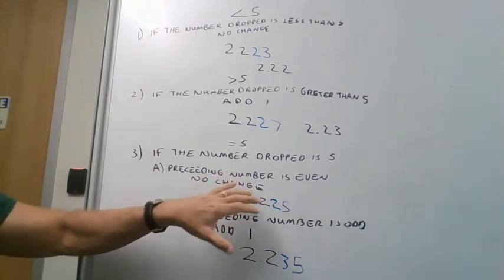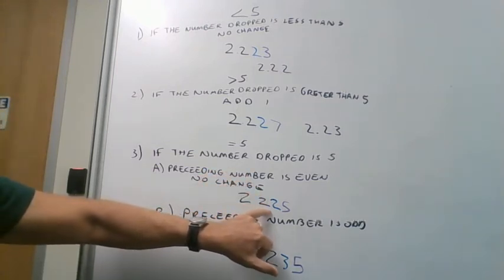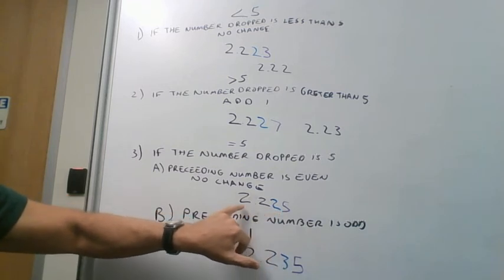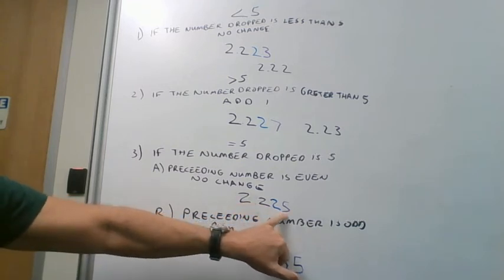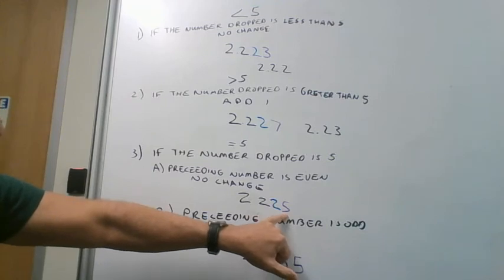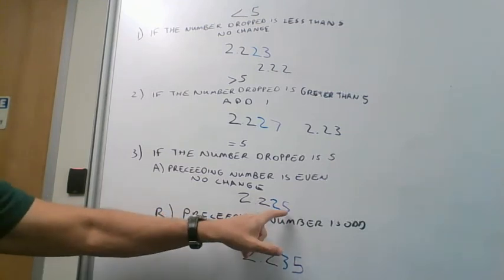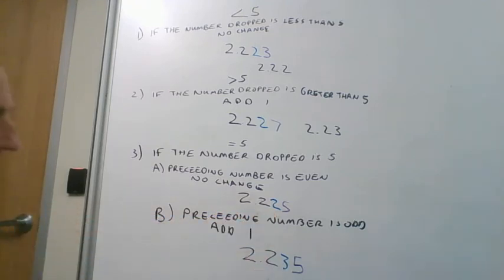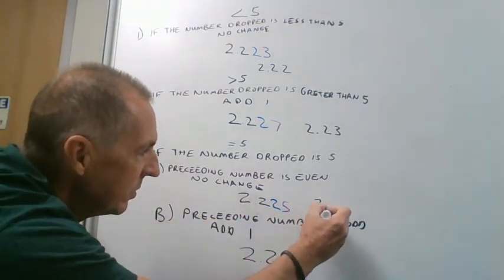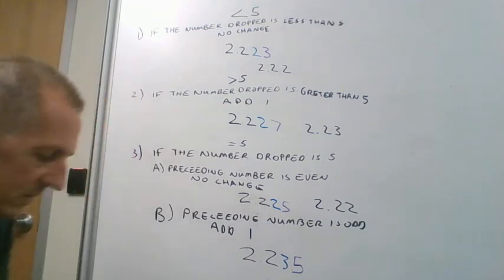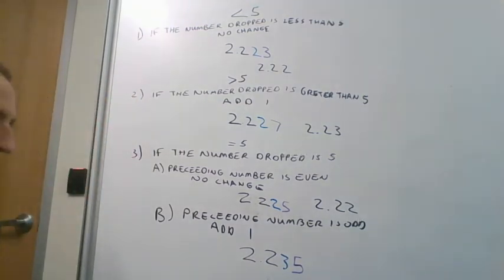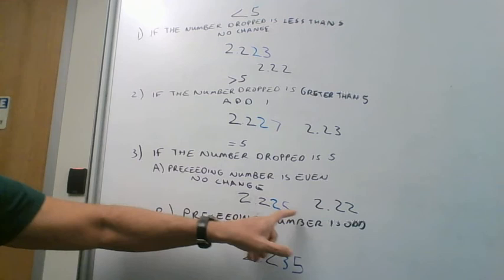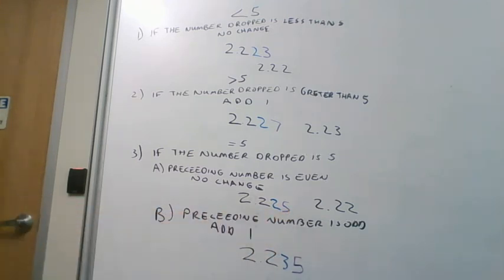Now we get to one where our decision is a little different. We want to round to three significant figures: count out one, two, three, four — the fourth digit is our decision number. We ask: is this less than five, greater than five, or equal to five? It's equal to five, so our rule says there's no change to the digit before it. We round this to 2.22. That may be different from how you learned it before, but we always end with an even number when the decision point number is a five.